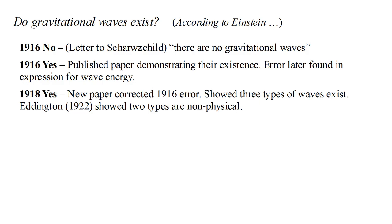But in 1922 Arthur Eddington showed that the other two types are non-physical. They represent an abstract oscillation of a coordinate system and don't correspond to anything physically observable.